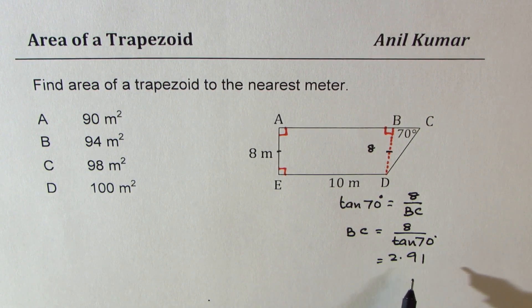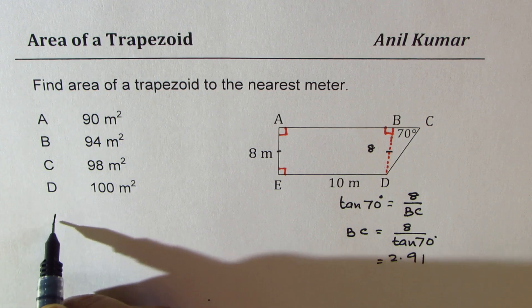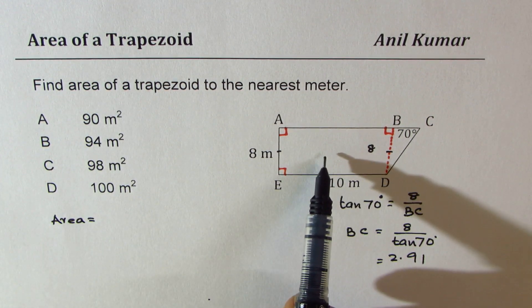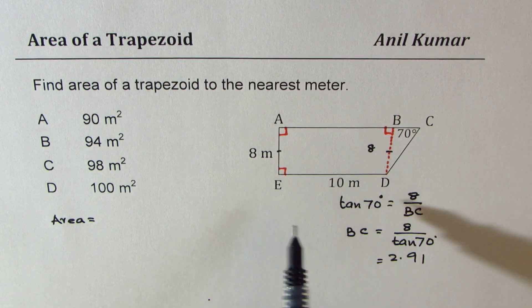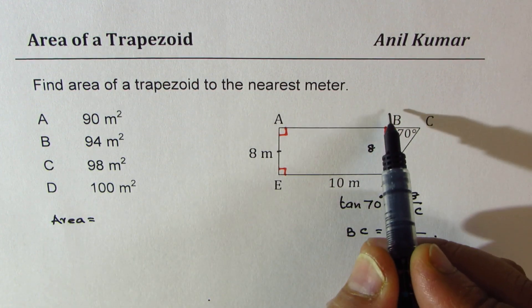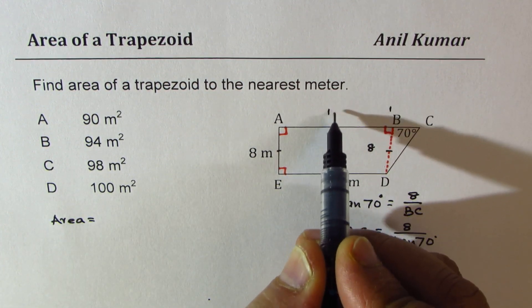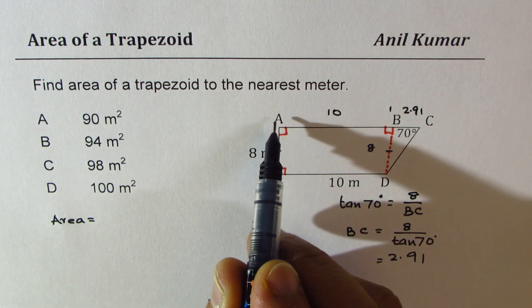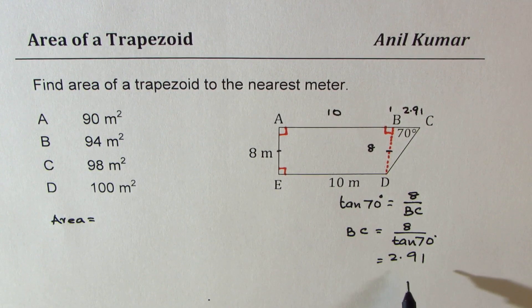Now we can easily find the area of a trapezoid. So area will be equal to, you can also find by adding area of rectangle and the triangle. But since we know BC and we know this is 10 and now this is 2.91, so total length AC is known to us which is 12.91.